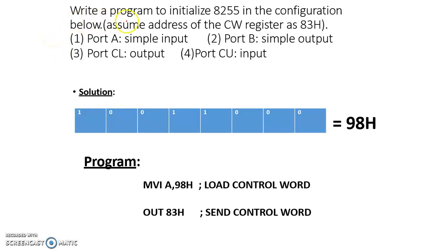Now we will see an example: write a program to initialize the 8255 in the configuration below. Assume the address of the control word register is A3. The port addresses are: Port A = 00, Port B = 01, Port C = 02, Control Word Register = 03. Port A is a simple input port, Port B is a simple output port, and Port C lower is an output port, in mode 0 operation.